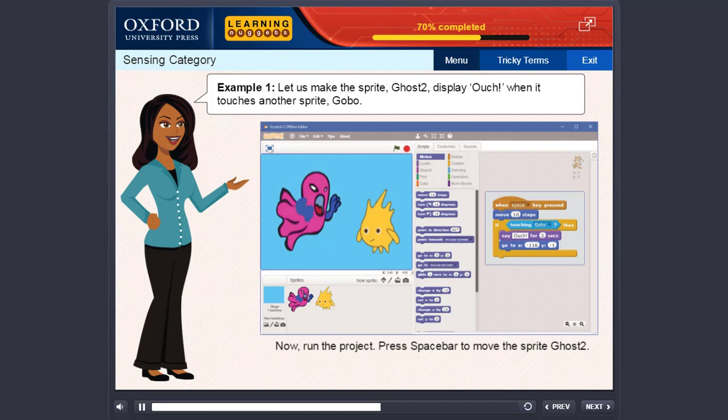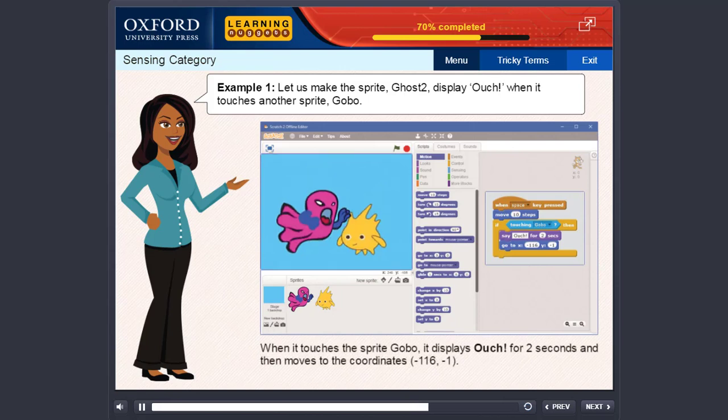Now, run the project. Press spacebar to move the sprite Ghost2. When it touches the sprite Gobo, it displays Ouch for two seconds and then moves to the coordinates minus 116, minus 1.